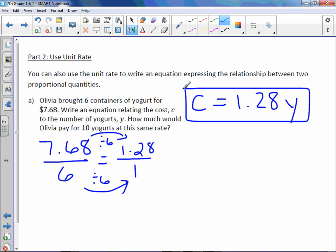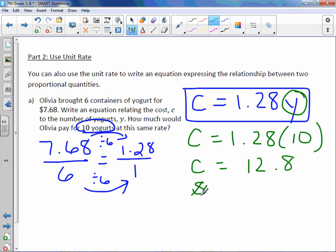The second part says how much would Olivia pay for 10 yogurts at this rate? So 10 yogurts. That means I'm plugging in 10 for Y. C equals $1.28 times 10. C equals $1.28 times 10 is 12.8 or $12.80.